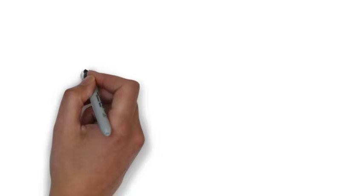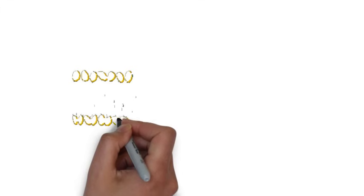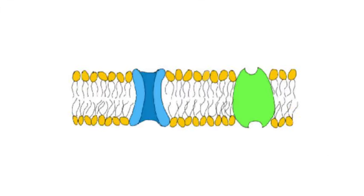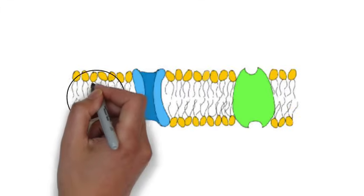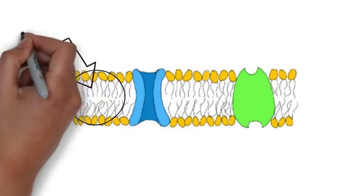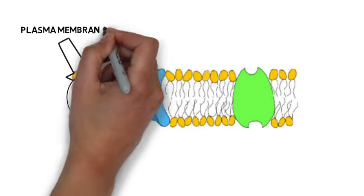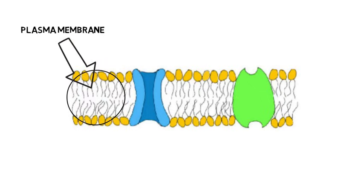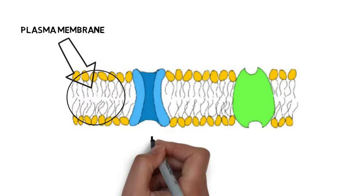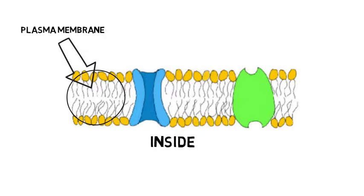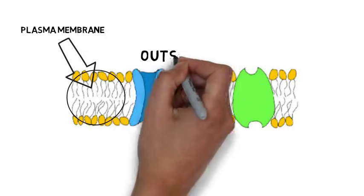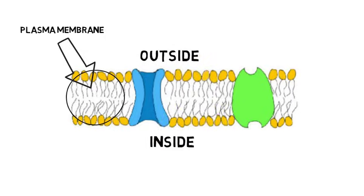Membrane potential refers to the difference in electrical charge between the inside and the outside of a neuron. This is the plasma or cell membrane of the neuron. It separates the inside of the cell from the outside environment. We'll say this is the inside, and this is the outside of the neuron.